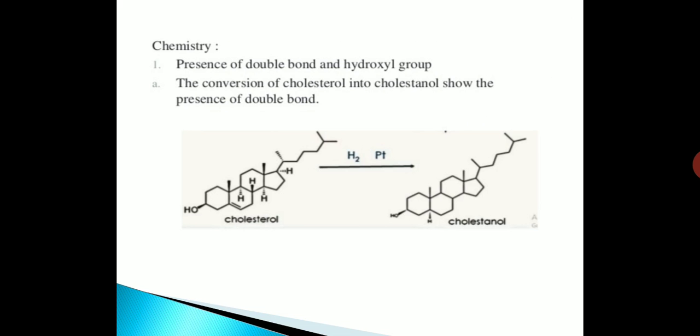Now we see the chemistry. Presence of a double bond and a hydroxyl group. The conversion of cholesterol into cholestanol shows that the presence of a double bond. Here we can see on reduction it gives cholestanol.